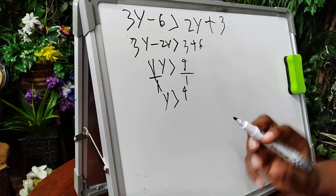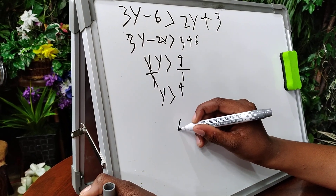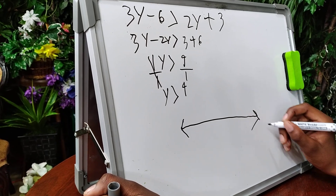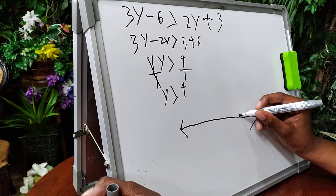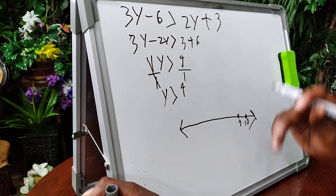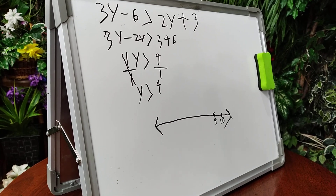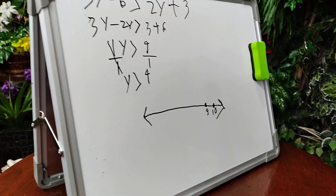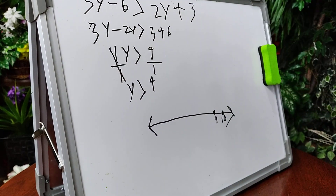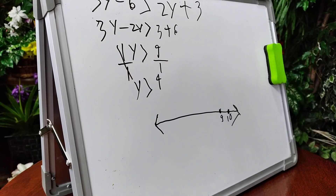If I want to show it on a number line, I'll simply do this. Let's say 9 is over here. Anything y would be greater than 9, so anything greater than 9 — like 10, 11, 21 — any integer greater than 9 satisfies this inequality.